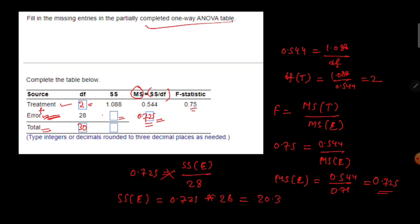Now we have the sum of squares of error, which is 20.3. The sum of squares of total is the sum of SS treatment and SS error: 1.088 plus 20.3 equals 21.388. That's how we complete the missing values in our ANOVA table. If you like this video, please subscribe to my channel. Thank you.